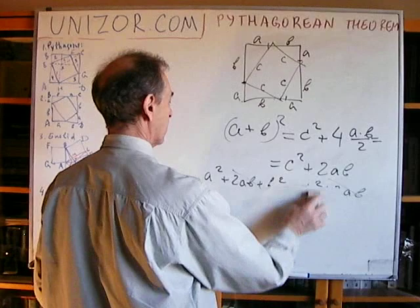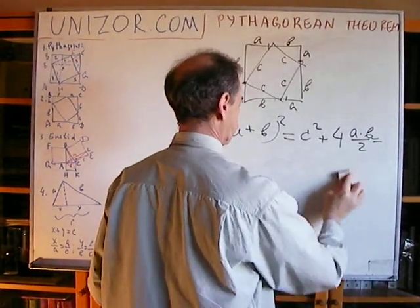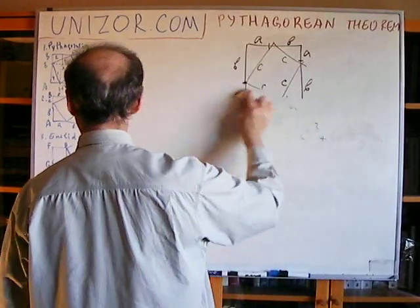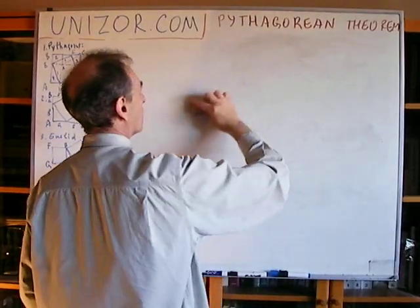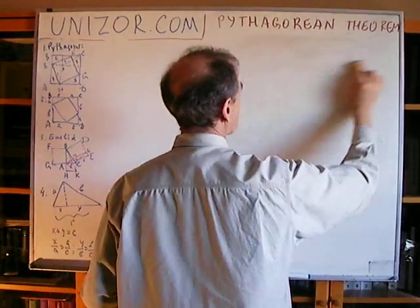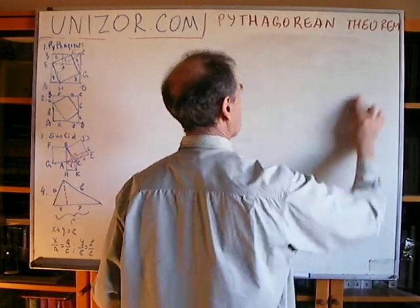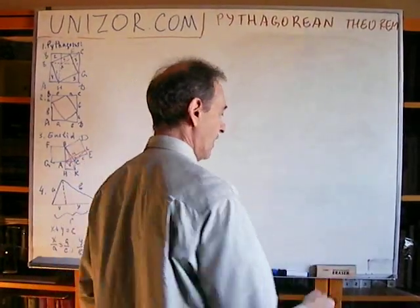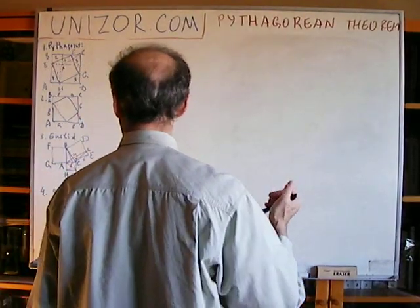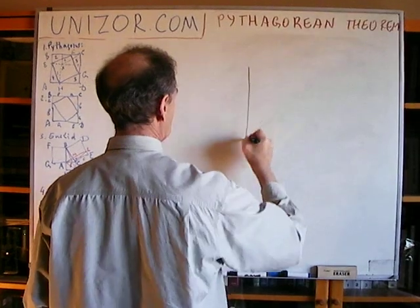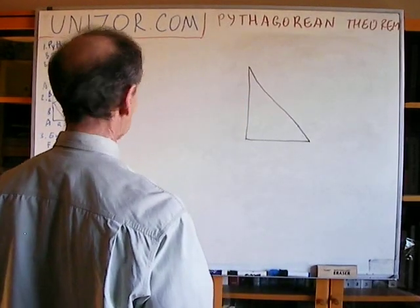I think it's a little bit easier just because we don't have to move things around. But this proof doesn't have any particular name attached to it. Now we will proceed to Euclid. Euclid is the famous figure in geometry who proved many different theorems, and for whatever reason, he has a more — I would say — complicated proof of this theorem.